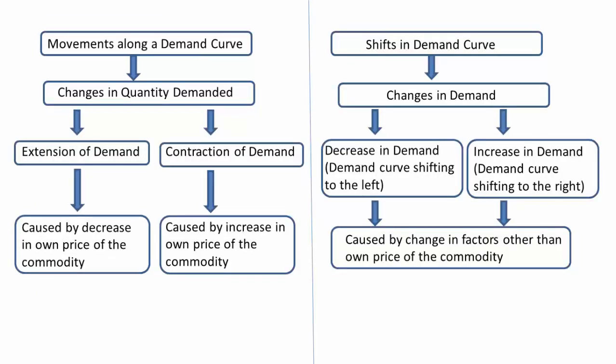Let's look at the flowchart summarizing movement and shifts in the demand curve. Movement along a demand curve leads to changes in quantity demanded — either extension of demand or contraction of demand. Extension of demand is caused by a decrease in the own price of the commodity, and contraction of demand is caused by an increase in the own price. On the other hand, shifts in the demand curve lead to changes in demand — either a decrease in demand, where the curve shifts left, or an increase in demand, where the curve shifts right. These shifts are caused by changes in factors other than the own price of the commodity.